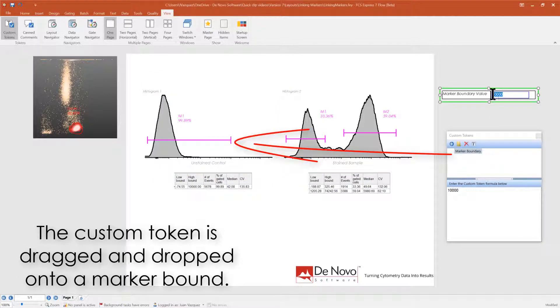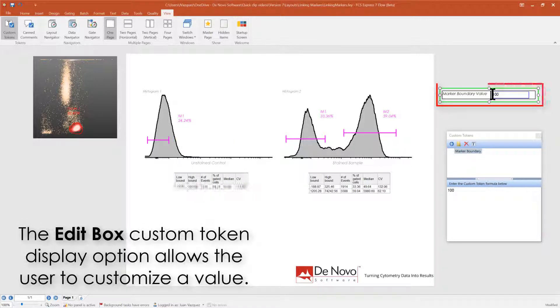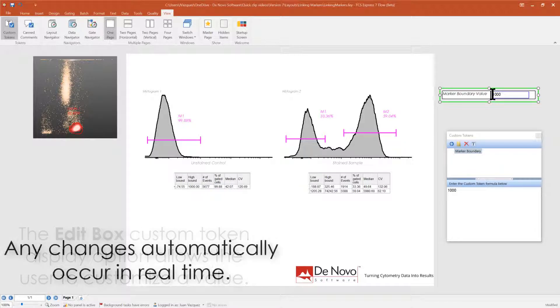The custom token is dragged and dropped onto a marker bound. The edit box custom token display option allows the user to customize a value. Any changes automatically occur in real time.